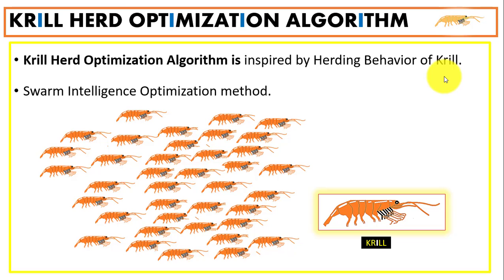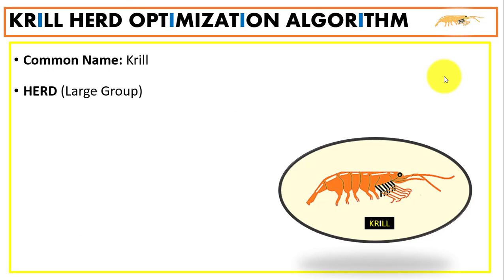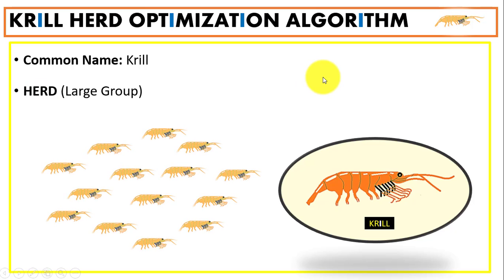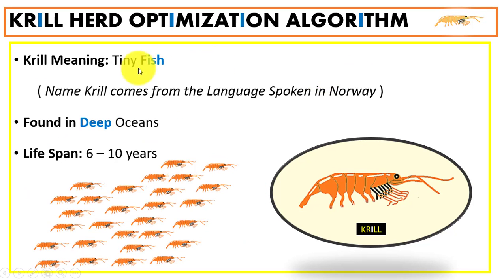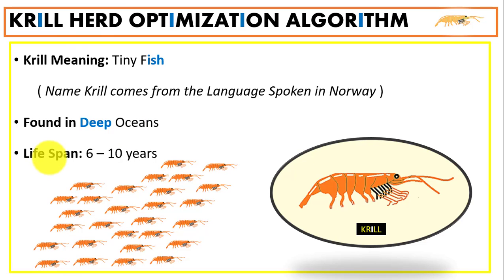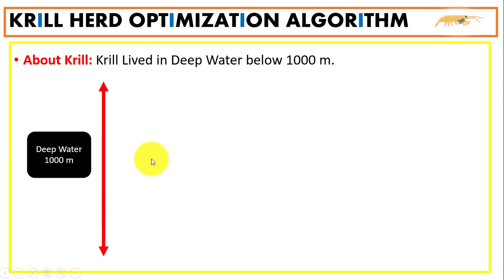The Krill Herd algorithm is used to solve complex optimization problems. The common name is krill, and 'herd' means a large group. The word 'krill' comes from the Norwegian language and means 'tiny fish.' In this algorithm we have a large group of krills.